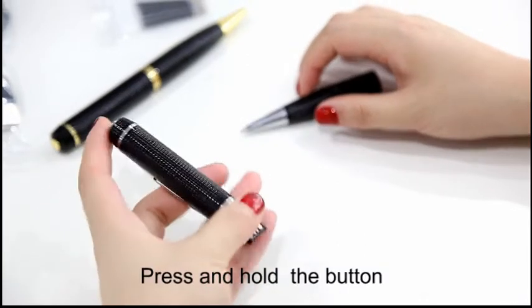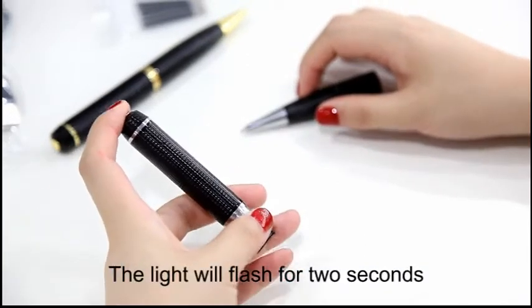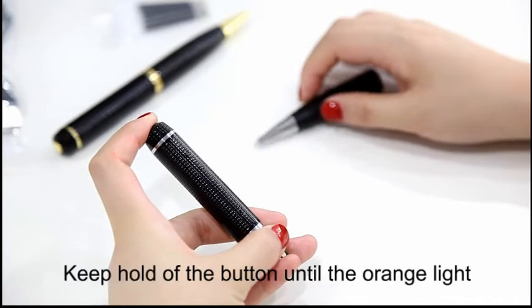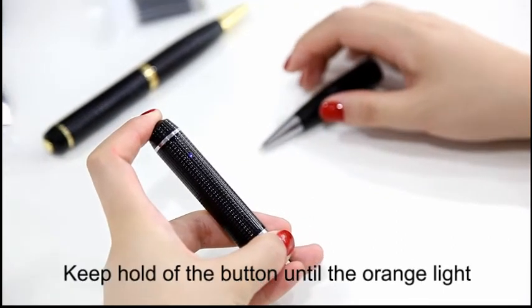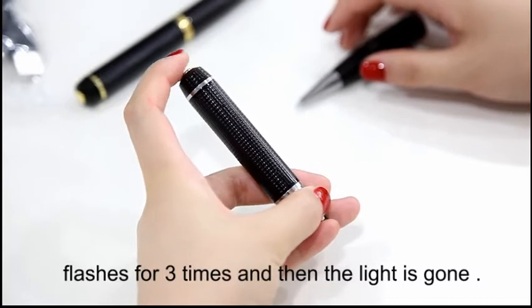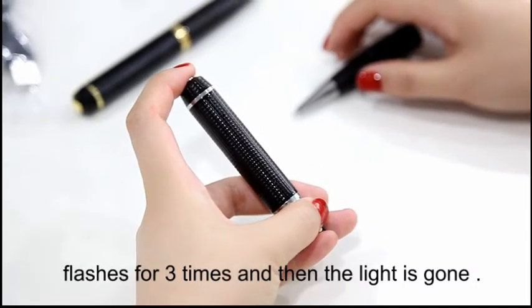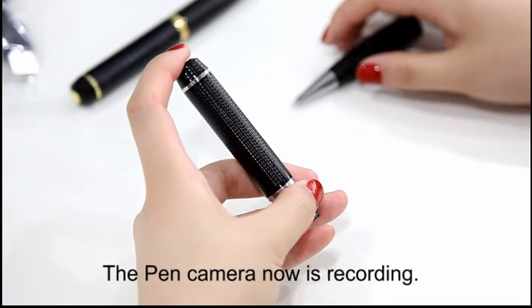Press and hold the button, the light will flash for two seconds. Keep hold of the button until the orange light flashes for three times, the light is gone. The pen camera now is recording.